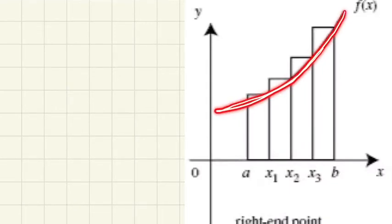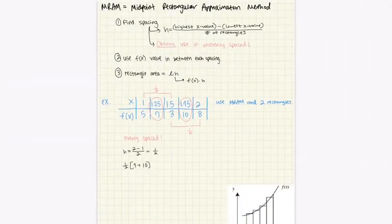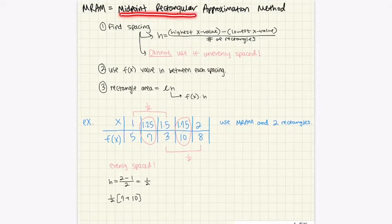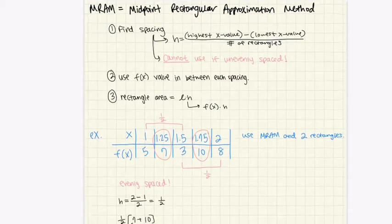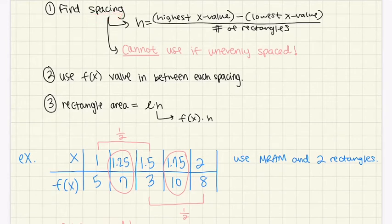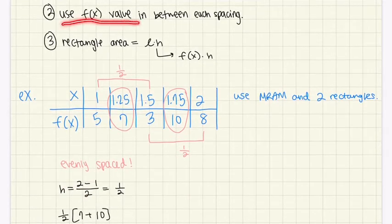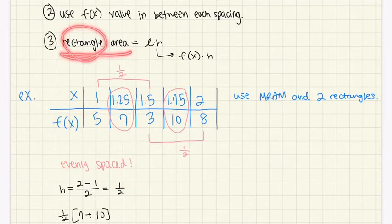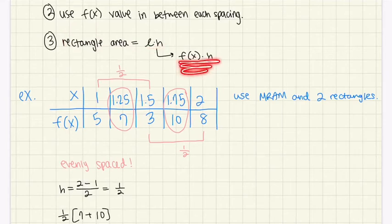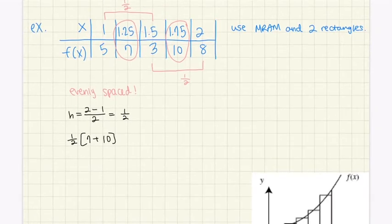As you can see in the graph, this is the actual curve and the rectangles go over the curve, making this an overestimate. The rectangles fall at the top right corner, and the curve follows those points. Moving on, this is MRAM — the Midpoint Rectangular Approximation Method. We go through the same steps, except for MRAM the spacing must be even, so the question cannot be asked with unevenly spaced data.